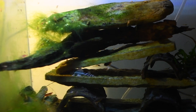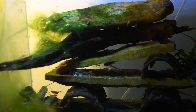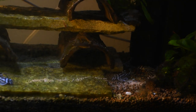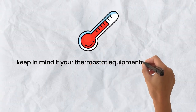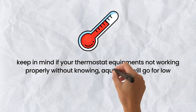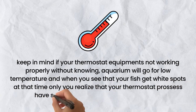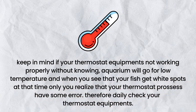Low temperature will cause infection — when it drops below 26°C, it will most probably cause infection. Keep your aquarium temperature in a static range according to the fish variety; 27°C is a good temperature for all kinds of fish. Keep in mind that if your thermostat equipment is not working properly, the aquarium will drop to a low temperature without you knowing. When you see white spots, only then do you realize your thermostat has some error. Therefore, check your thermostat equipment daily.